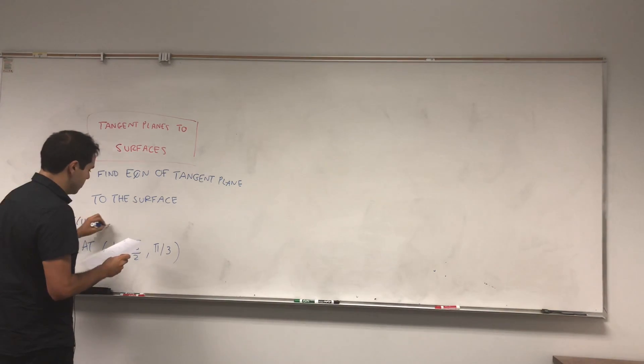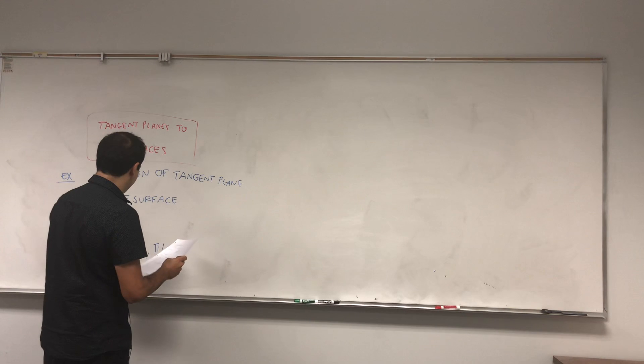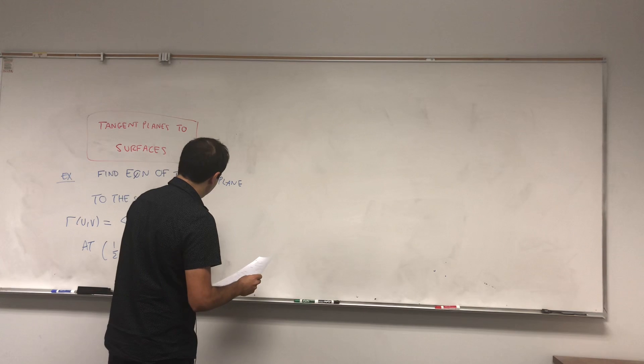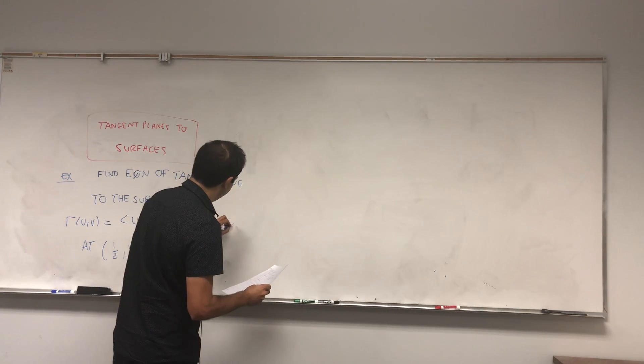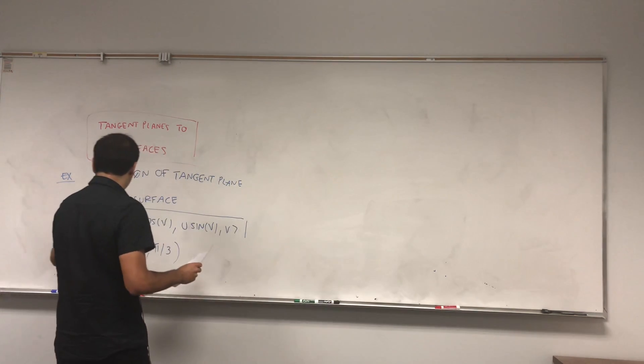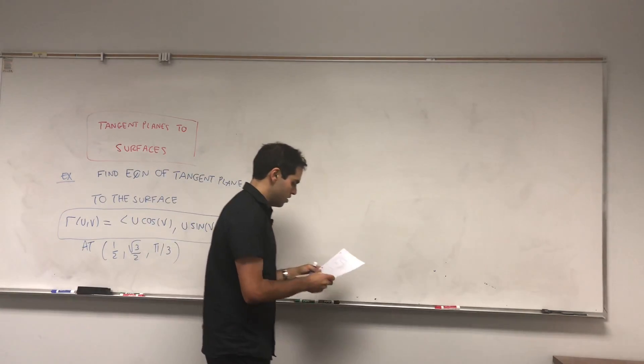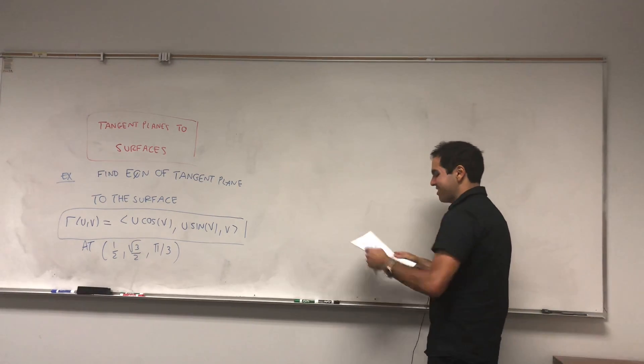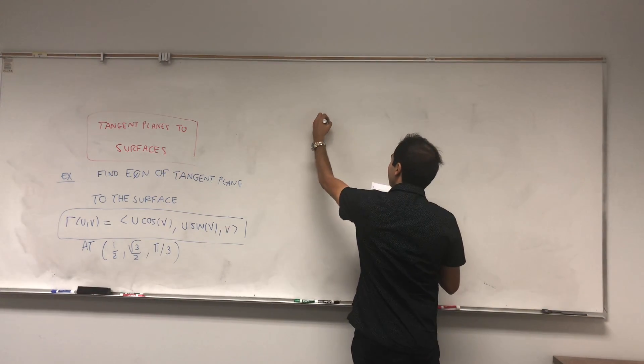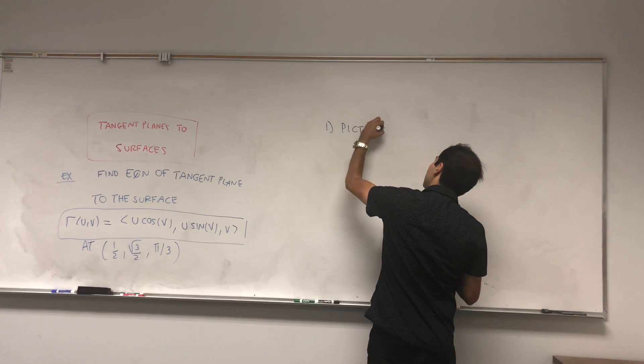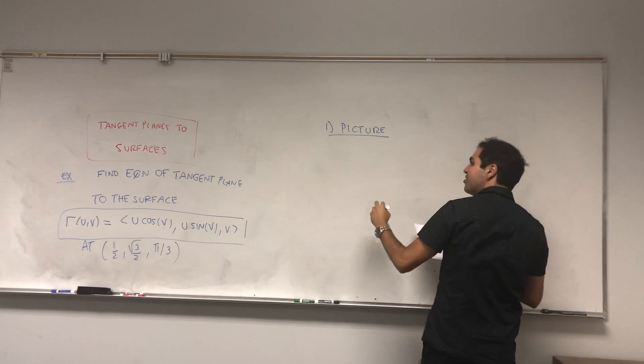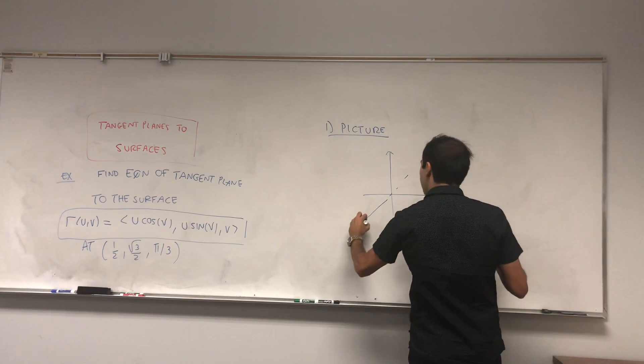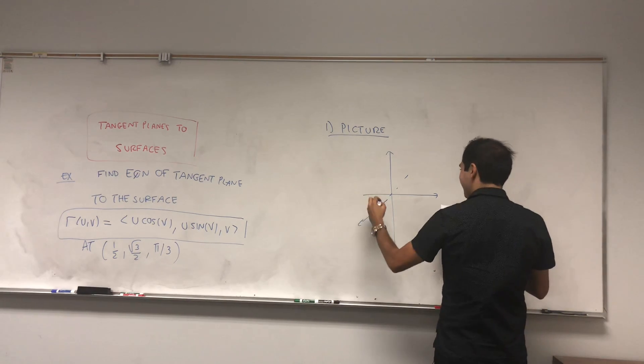In this case, suppose it's given by R(u,v), it's u cosine v, u sine v, and v. In this problem, we don't need to know the balance, but in case you're curious what this looks like, turns out it's what's called a helicoid. It's sort of a helicopter surface. So let's see if I can draw this.